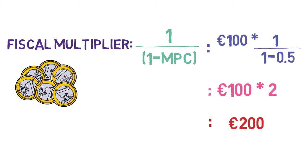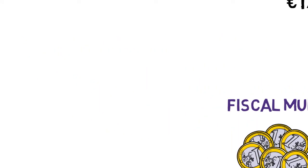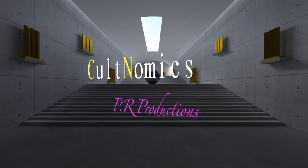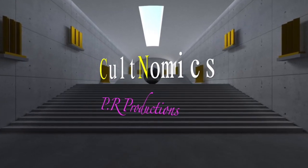This gives us 200 euro. So the initial spend of 100 euro by the government can actually generate a potential 200 euro in GDP. This is due to the extra transactions, not extra money put in. So the total increase in GDP is 200 euro. I hope you call back to Cultnomics soon — bye for now.